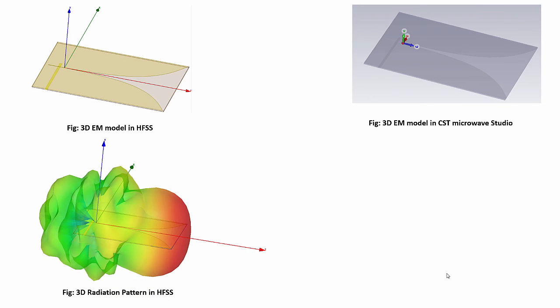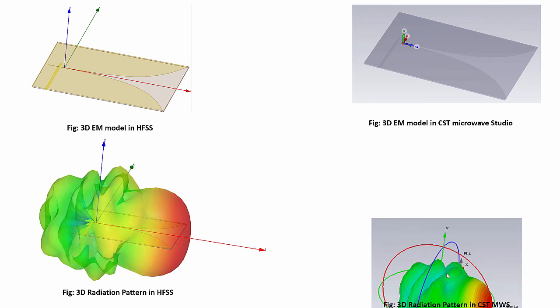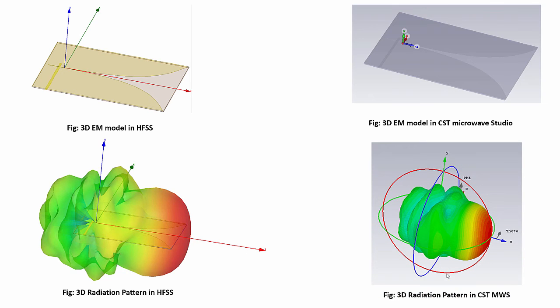This is the simulation result. Basically it shows the radiation pattern in HFSS and that one is in CST Microwave Studio. You can see the radiation pattern is end-fire type. So this is similar.